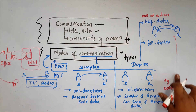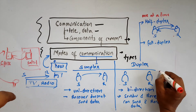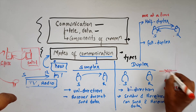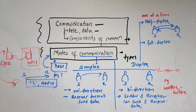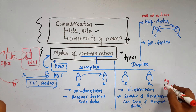In half-duplex technology, such as walkie-talkie, both parties use the same frequency. Half-duplex is cheaper to use and practical for large-scale applications. The half-duplex mode of communication is used in walkie-talkie devices.